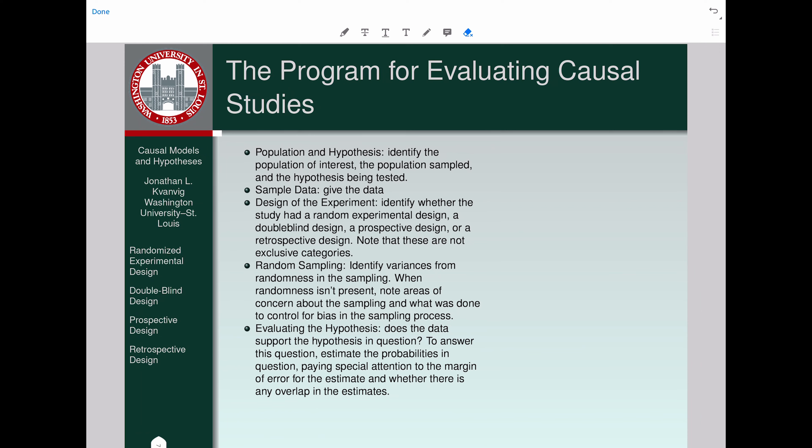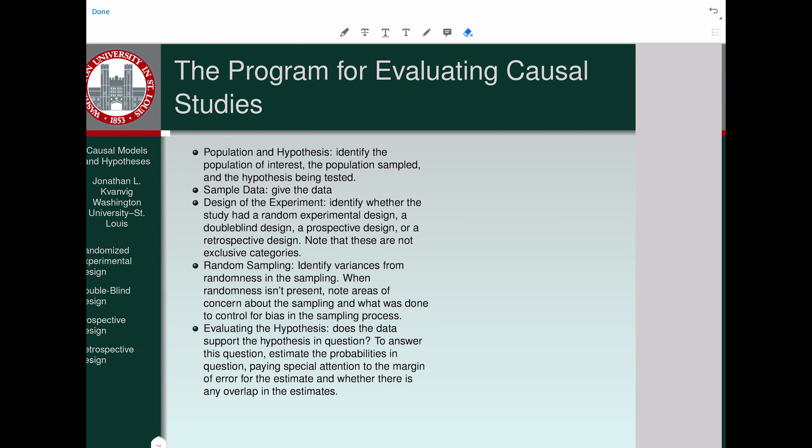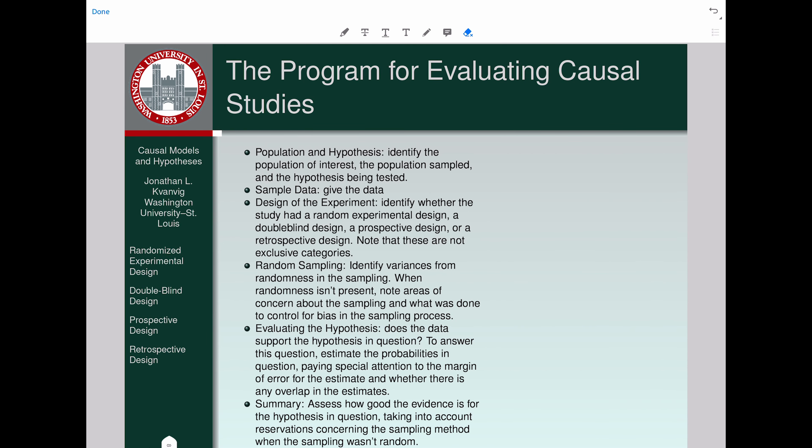Finally, evaluate the hypothesis. Does the data support the hypothesis in question? To answer this, estimate the probabilities using the margin of error information we learned about when we studied statistical hypotheses, paying special attention to the margin of error for the estimate and whether there's any overlap. We can then summarize and assess how good the evidence is, taking into account any reservations about the sampling method when it wasn't random. So we have six steps to our program.